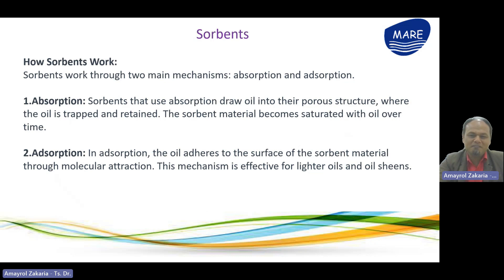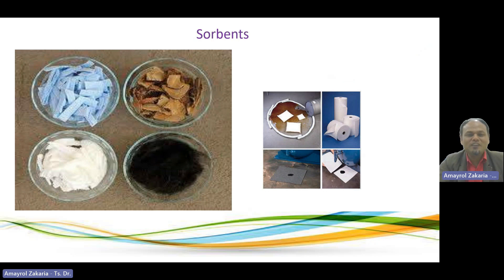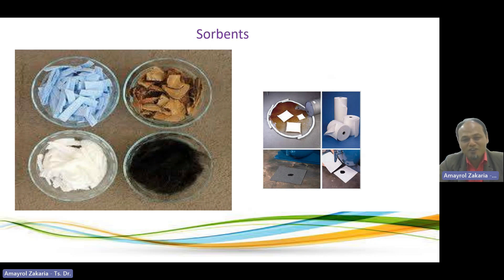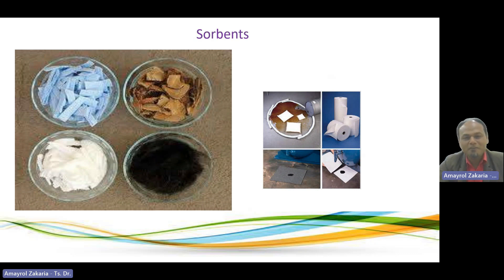This adsorption mechanism is most effective for lighter oils and oil sheens. Here are examples of sorbent devices — some of them can be sourced from natural materials and some must be processed first. This depends, as mentioned, on the organization's budget and resources.